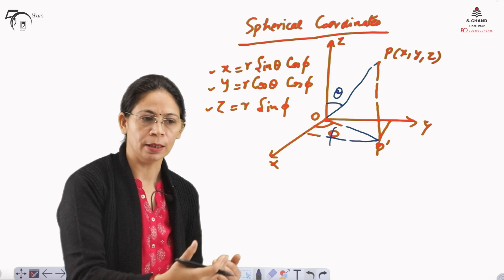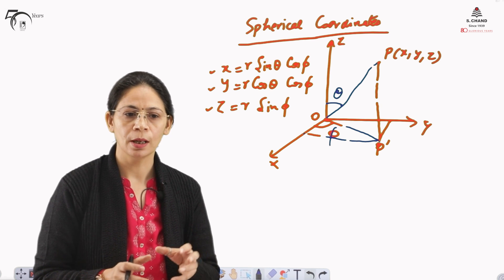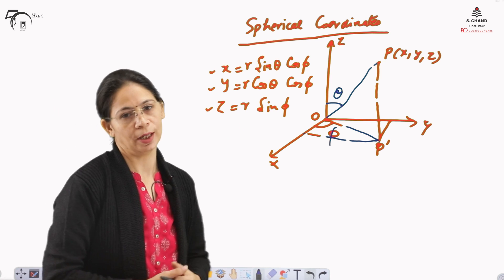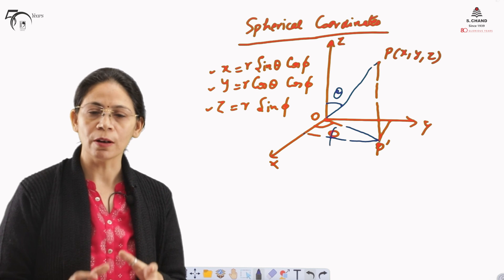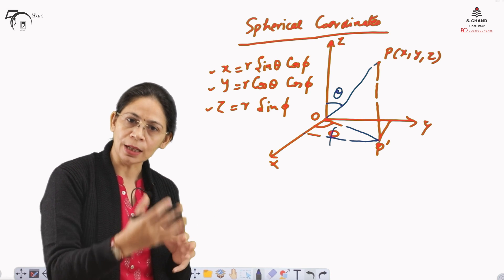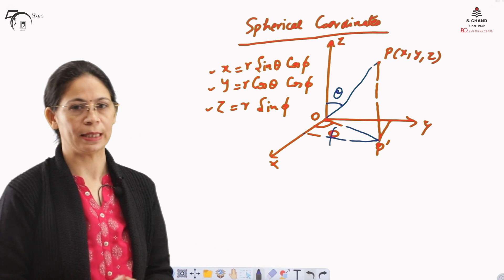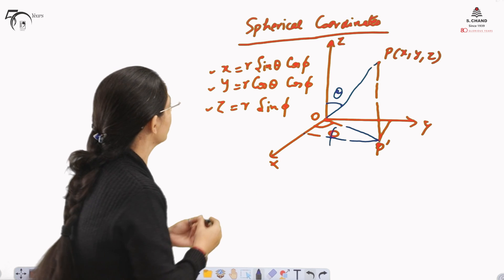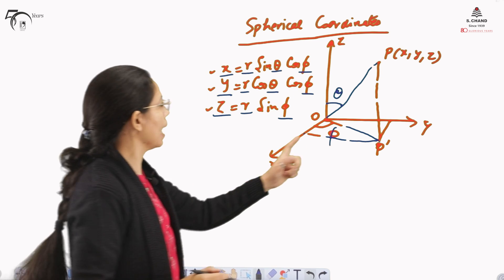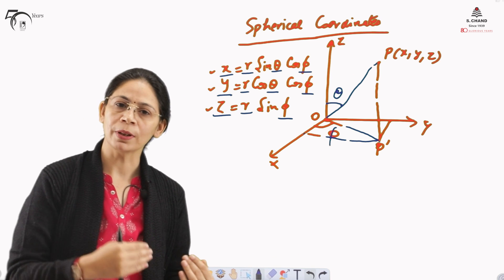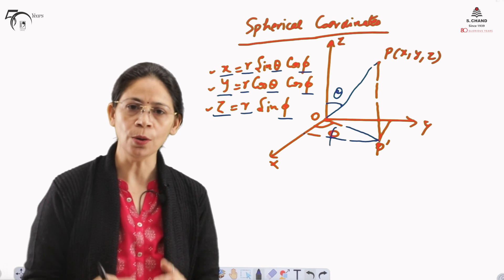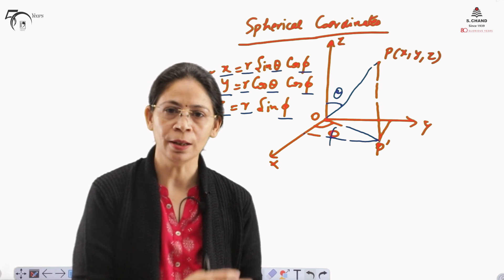The benefit of cylindrical and spherical coordinates is that whenever a shape is involved — for example, a spherical shape — it is always easier to write the expression in spherical coordinates. Similarly, for a cylindrical shape, it is easier to work in cylindrical coordinates. We then find the limits for x, y, and z in terms of R, theta, and phi, where theta is the angle between the z-axis and the line joining point P to the origin, and phi is the angle between the x-axis and the projection of P on the x-y plane.